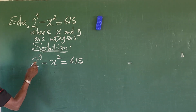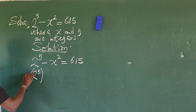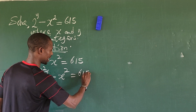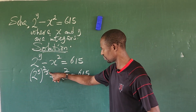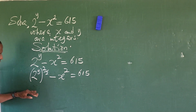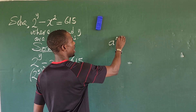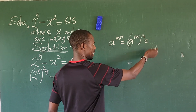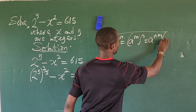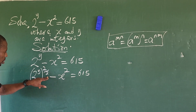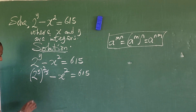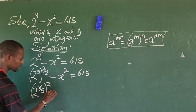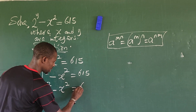I want to rewrite the left side. I write 2 to the power of y as (2^(y/2))² divided by 1 — since 2 over 2 equals 1, this changes nothing. Using the law of indices, a^(mn) = (a^m)^n = (a^n)^m, we can bring in the 1/2 exponent, giving us (2^(y/2))² minus x squared equals 615.